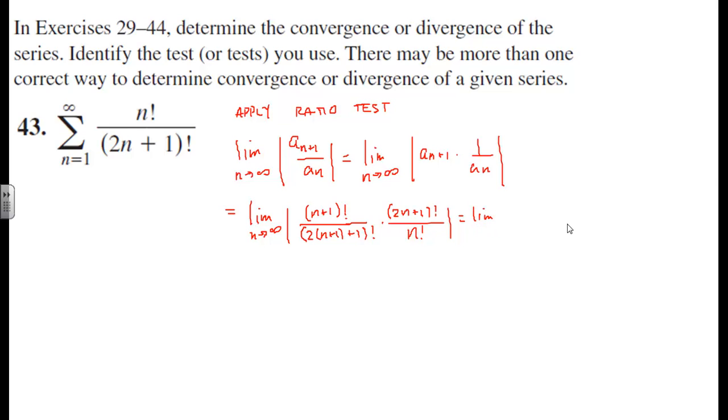Probably on the easier side is the fact that between n plus one factorial and n factorial, we're going to end up with an n plus one on top. Now between these two, perhaps we should do a little bit of cleaning up. We have two n plus one factorial, but underneath there we have two n plus two plus one factorial.